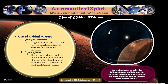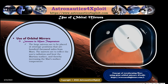Use of orbital mirrors: Large orbital mirrors that will reflect sunlight and heat the Mars surface are under proposition. The mirrors, which could be made of thin aluminium-spread frame, could be placed in orbit around Mars to increase the total insolation it receives. An orbiting array of reflective balloons which focuses sunlight onto the surface of Mars is shown in this picture. The large mirrors are to be placed at strategic positions, 100,000 miles from Mars, to reflect the sun's radiation and heat the Martian surface, thereby increasing the Mars surface temperature.